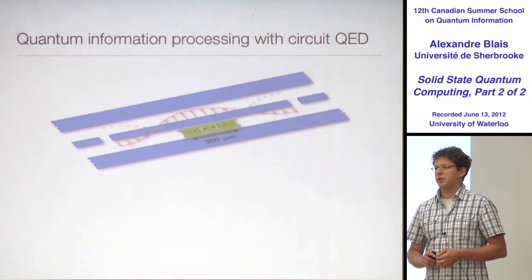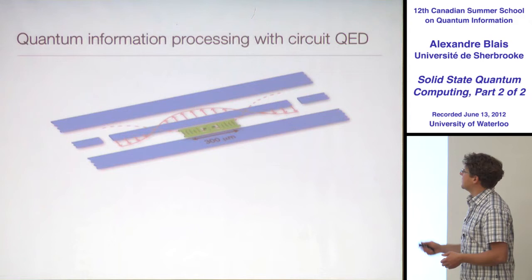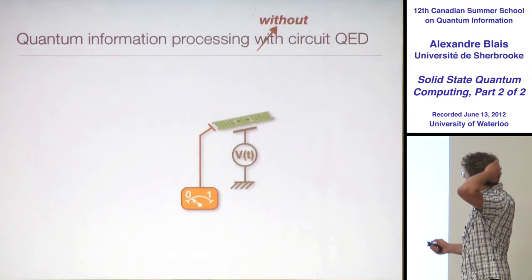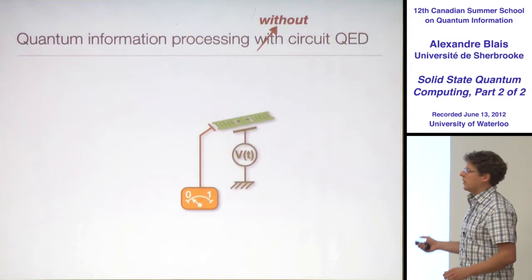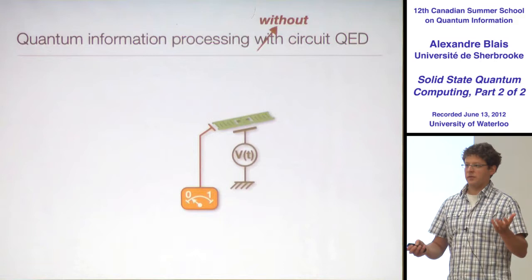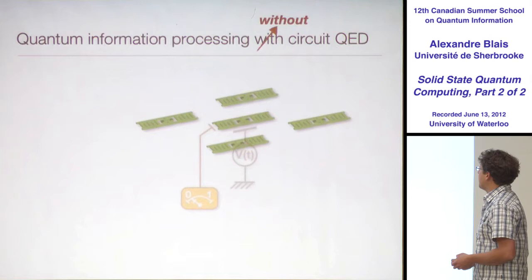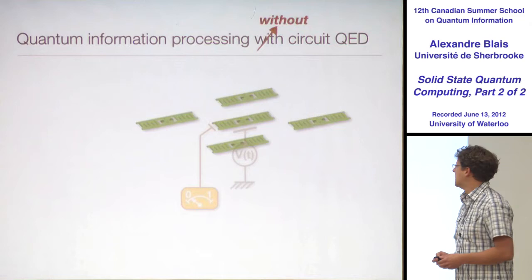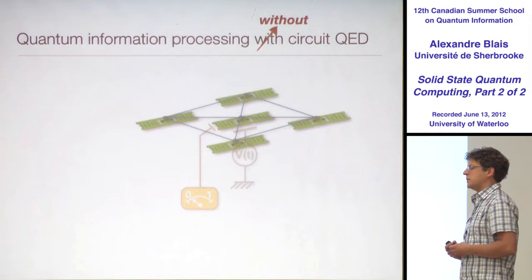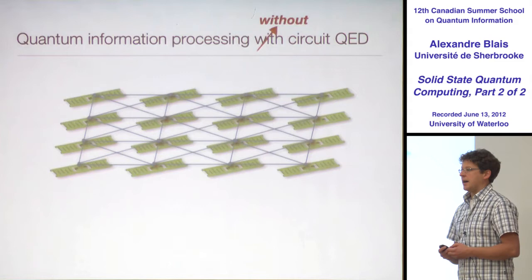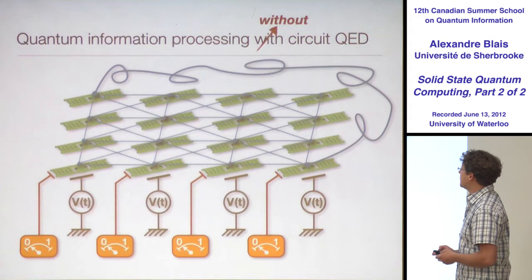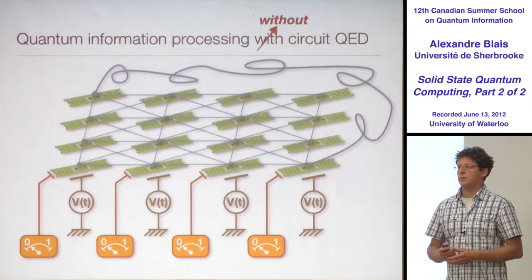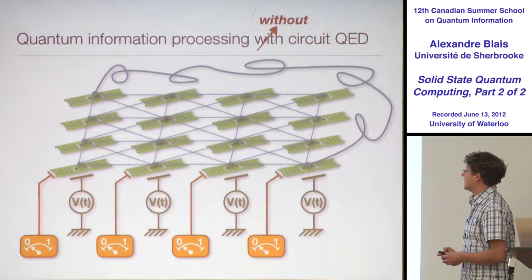That's single qubit, but we'd like to go to two qubits. Before going to many qubits in circuit QED, consider: I have a transmon which needs a voltage source to control it and a measurement apparatus. If I want many of them, all with the same instruments, with little capacitors between them for interaction — including non-nearest neighbors talking to each other — this rapidly becomes a nightmare.